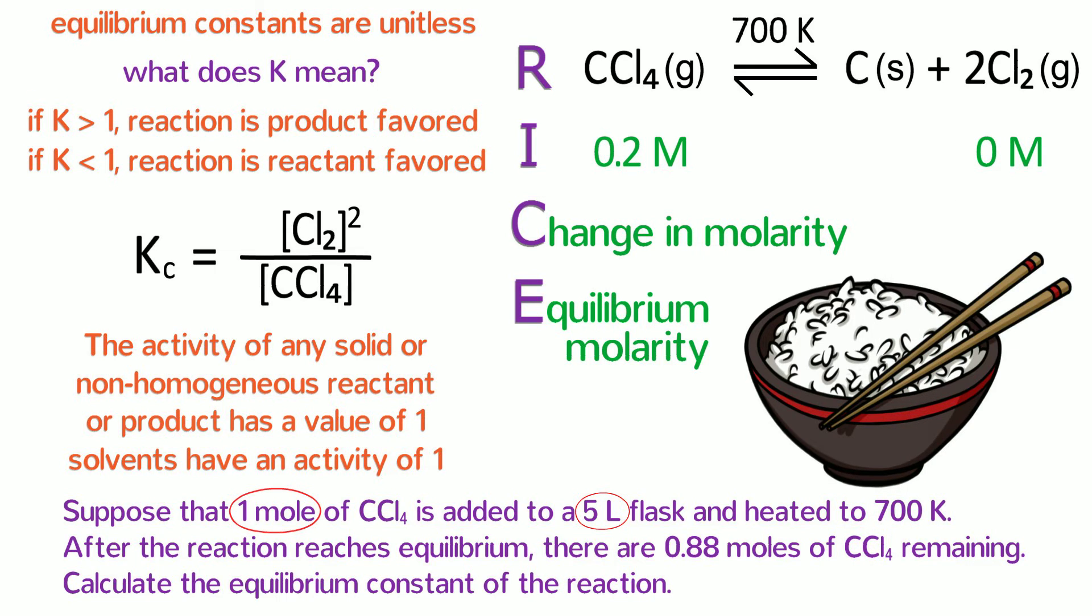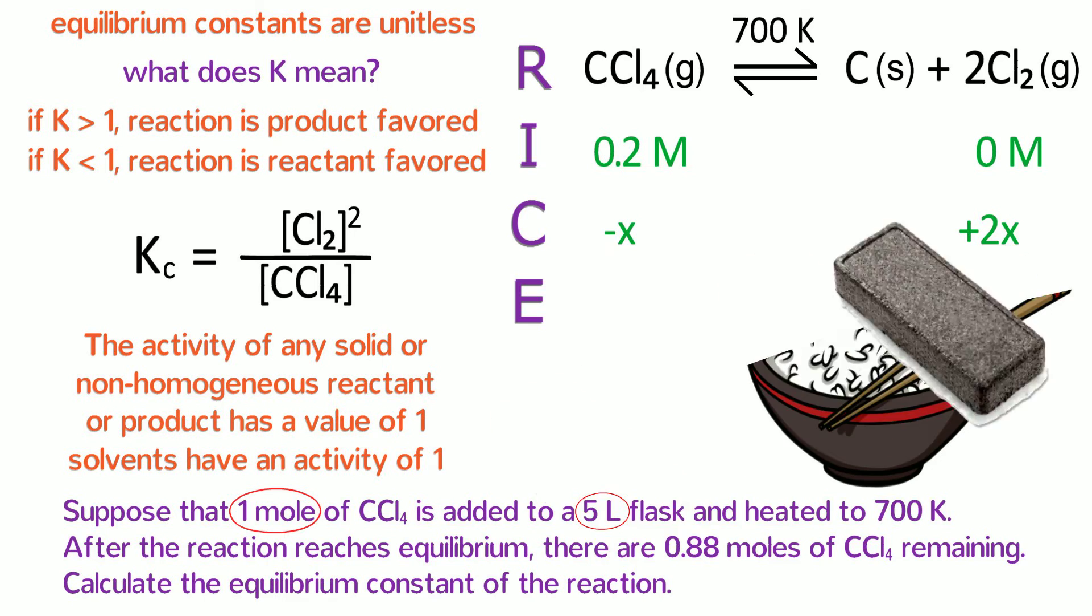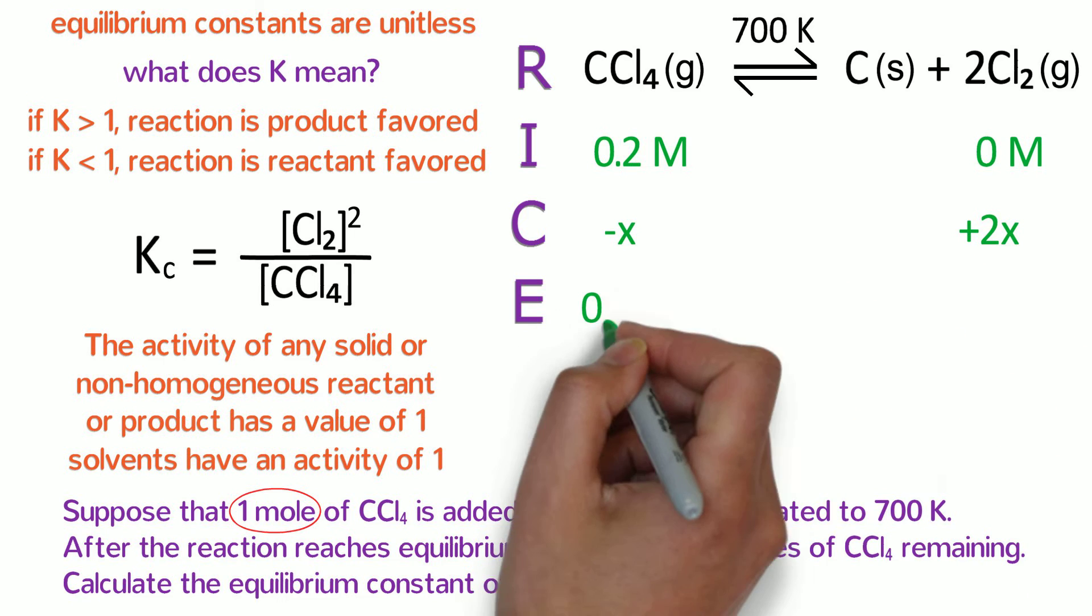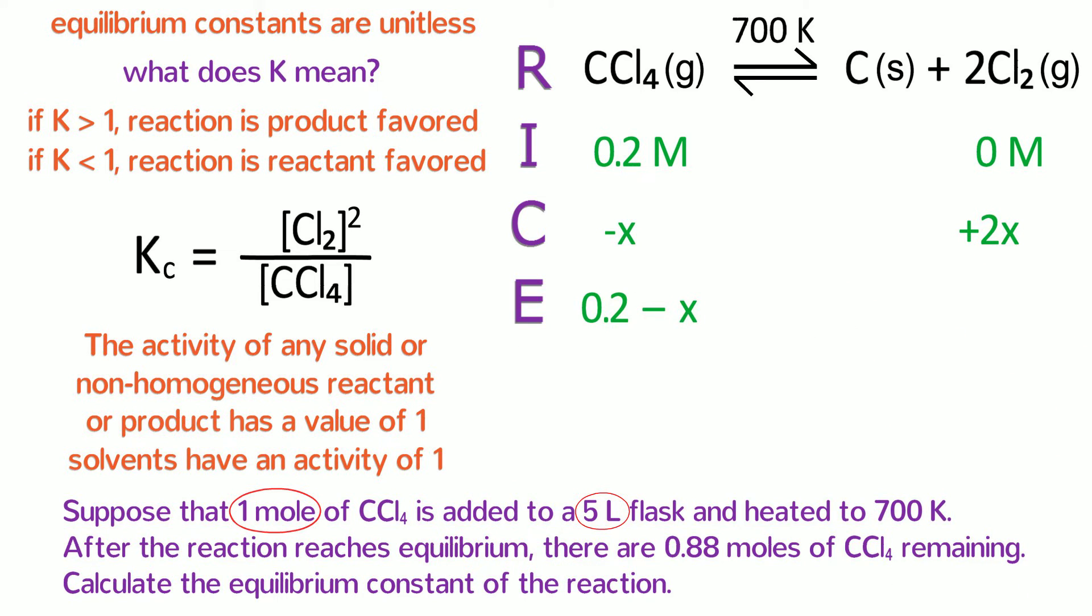As for the change in molarity, we know that the reactants are decreasing by a certain amount, so we put minus X for CCl4. And the coefficients tell us that 2 Cl2 are made for every 1 CCl4 that is lost, so we put plus 2X for Cl2. The equilibrium molarity is simply the initial molarity plus the change in molarity, so that is 0.2 minus X for carbon tetrachloride and 2X for chlorine.